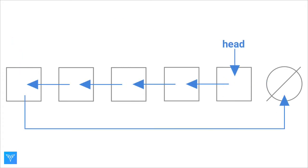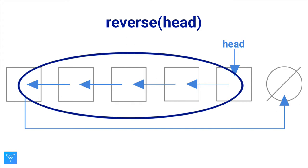We want to apply a function that does two things. It reverses the direction of the arrows, that is, it changes the structure, and it returns a pointer to the new beginning of the list. Here we see that all the nodes stayed in place in memory, but only the direction of the arrows changed.